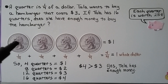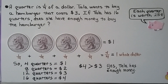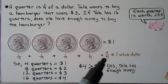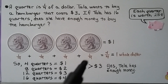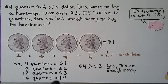1/4 is 1/4 of a dollar. Tala wants to buy a hamburger that costs 3 dollars. If Tala has 16 quarters, does she have enough money to buy the hamburger? Well, 4 quarters equal 1 dollar — each quarter is 1/4 of a dollar, so 4/4 equals 1 whole dollar. If 4 quarters equal 1 dollar, then 8 quarters must be 2 dollars, 12 quarters must be 3 dollars, and 16 quarters is equal to 4 dollars. The hamburger only costs 3 dollars, and 4 dollars is greater than 3 dollars, so yes — Tala has enough money to buy the hamburger.